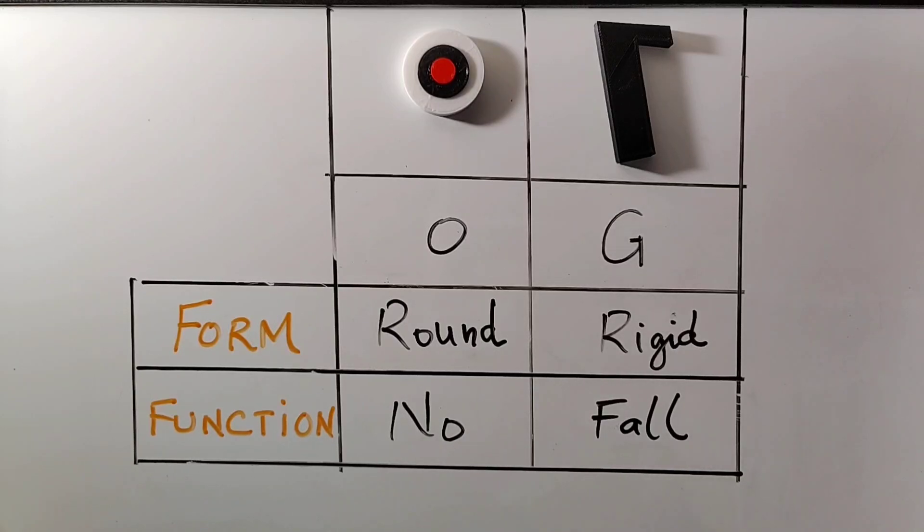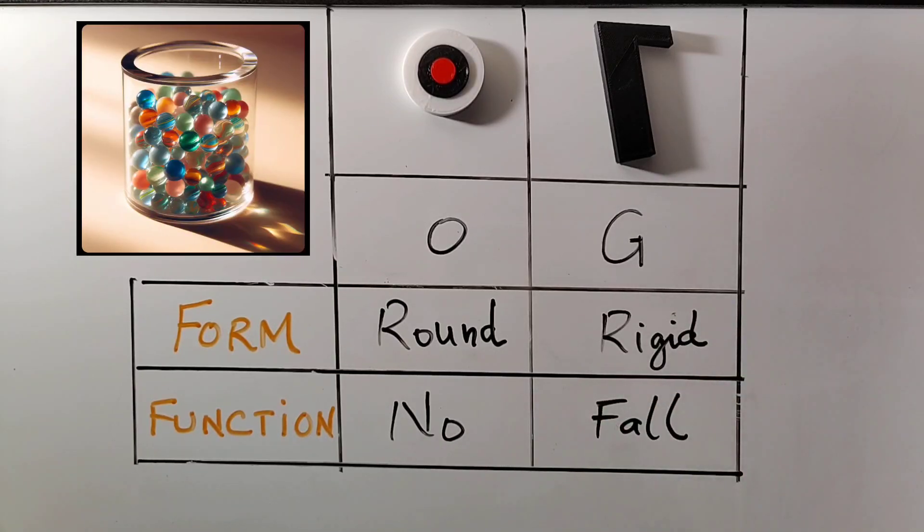Altogether, a container is something round, rigid, that keeps things from falling.